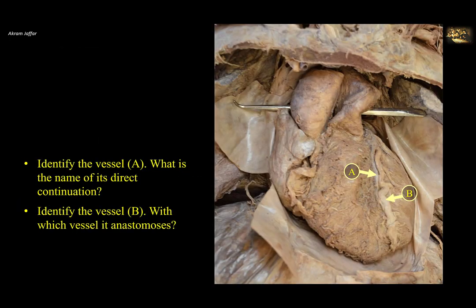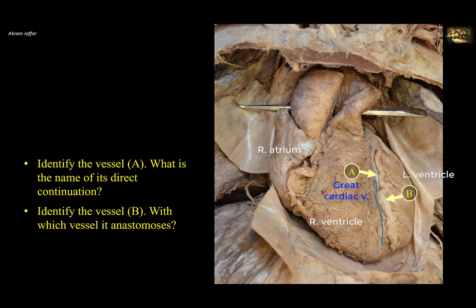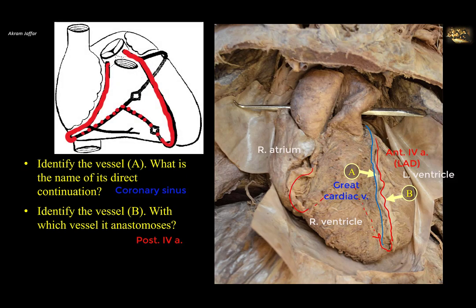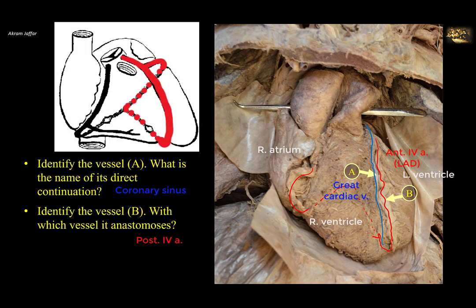Identify vessel A and its direct continuation. Identify vessel B and with which vessel it anastomoses. This is the sternocostal or anterior surface of the heart showing the right atrium, right ventricle, and left ventricle. A is the great cardiac vein, which starts at the apex of the heart, ascends, and continues around the left border to join the oblique vein of the left atrium, forming the coronary sinus. B is the anterior interventricular artery, or left anterior descending, which passes around the apex on the inferior border to anastomose with the posterior interventricular branch — usually a branch of the right coronary artery, but in left dominance, a branch of the circumflex artery.